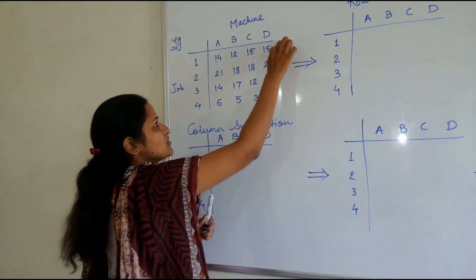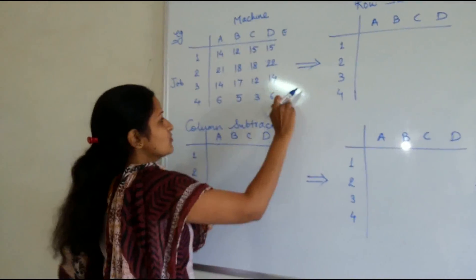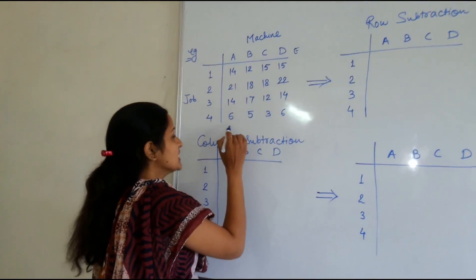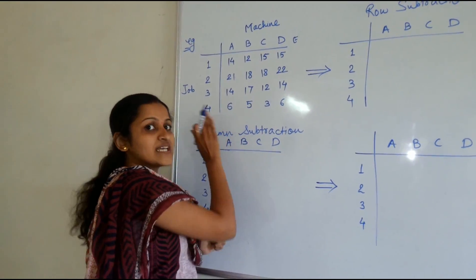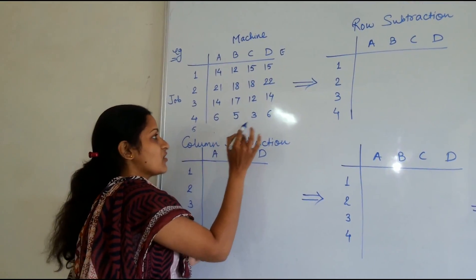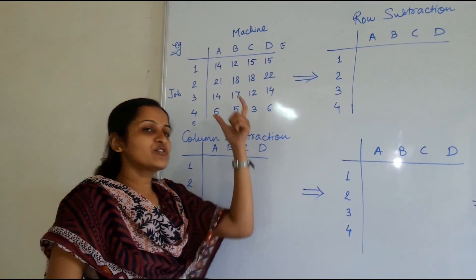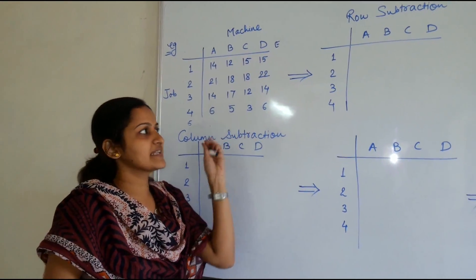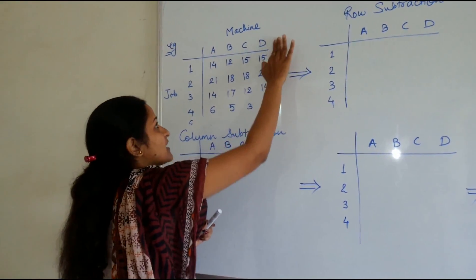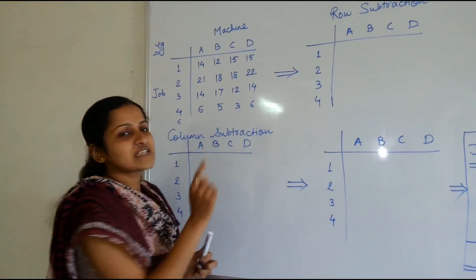Let us take an example. Suppose there is one more column, say E — so there are 5 columns and only 4 rows. You will add on your own the fifth row with all figures as 0, 0, 0, 0. This is how you balance this matrix and then solve it ahead. As we know our matrix is already balanced, let us start solving.